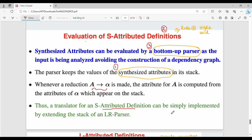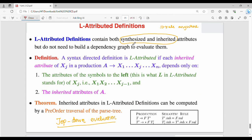Overall, a translator for S-attributed definition can be simply implemented by extending the stack of an LR parser. For S-attributed definitions, you can evaluate the synthesized attributes using the LR parser. The attribute values are computed from the attribute values of the right-hand side symbols according to the semantic rules.